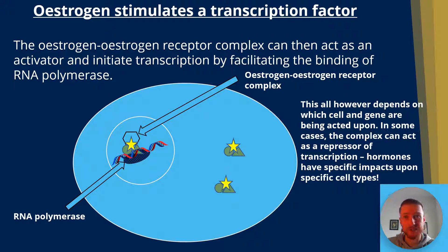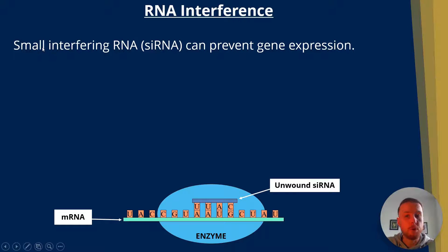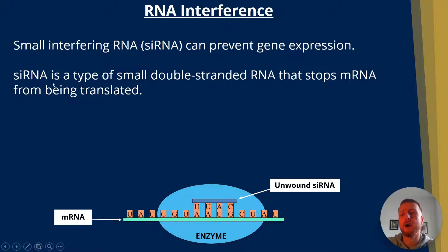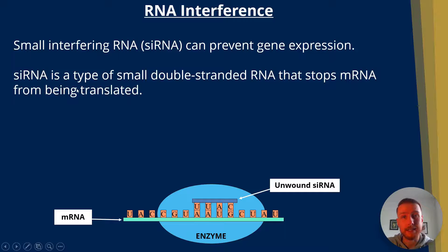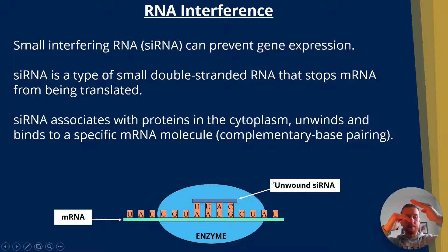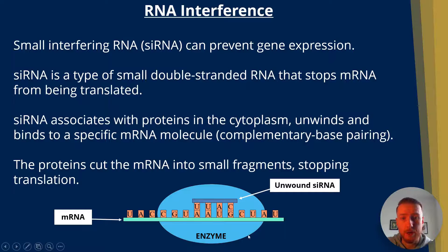Hormones have specific impacts on different cells. RNA interference: small interfering RNA can prevent gene expression — it interferes with translation. siRNA is a type of small double-stranded RNA that stops mRNA from being translated. siRNA associates with proteins in the cytoplasm, unwinds, and binds to a specific mRNA molecule via complementary base pairing. Because it's RNA, it has uracil instead of thymine. The proteins which the enzyme is associated with will cut the mRNA into small fragments, stopping translation at the ribosome.